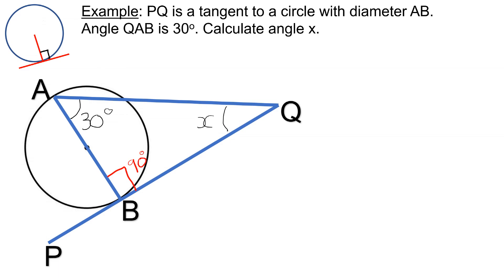We can now look at triangle ABQ. We have interior angles 30 and 90. So to find X, we add up 30 and 90, which is 120, and then subtract from 180, which gives us an answer of 60 degrees.